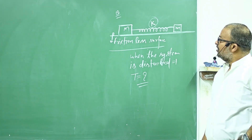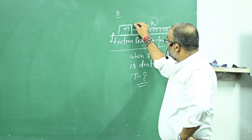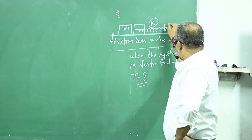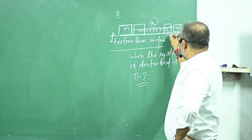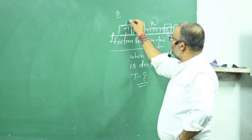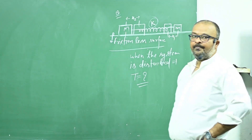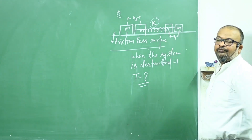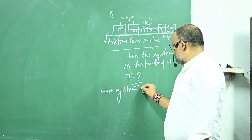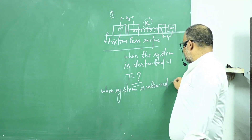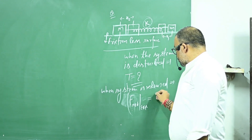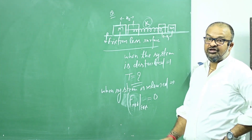Suppose the displacement of this block is x1 and the displacement of this block is x2. Now it is released. When the system is released, the net external force on the system is zero — so the net force on the whole system is zero.